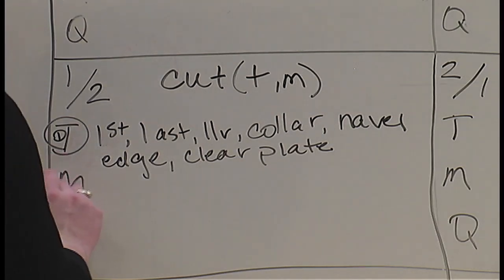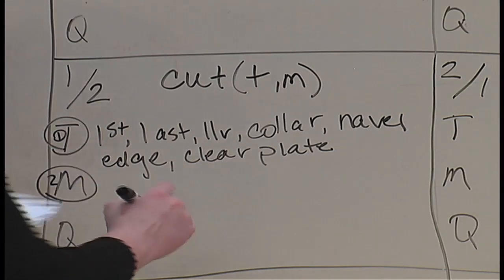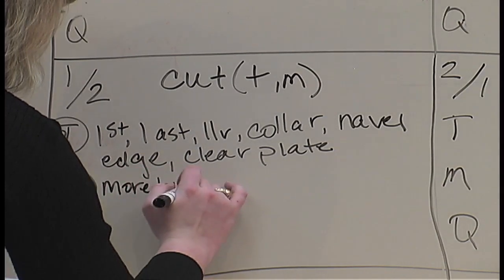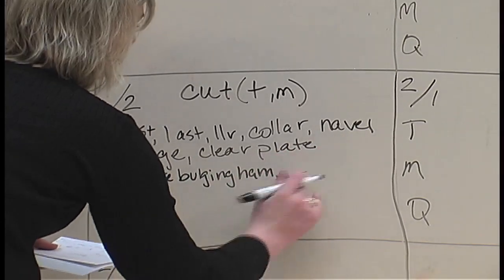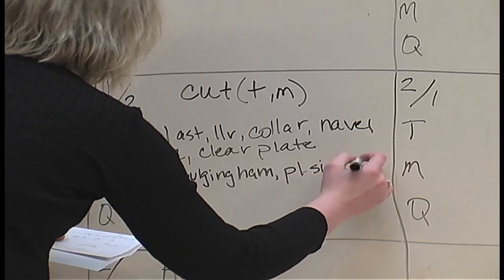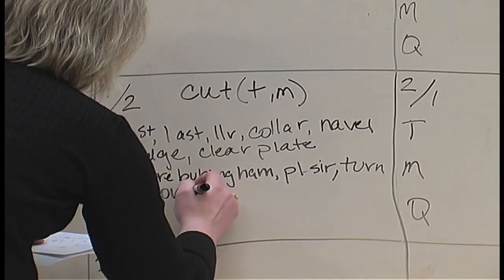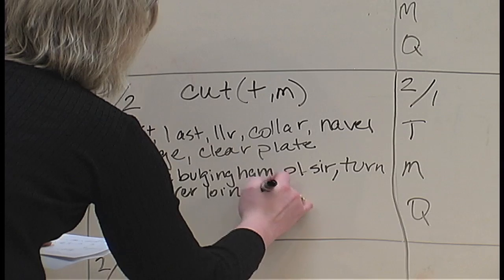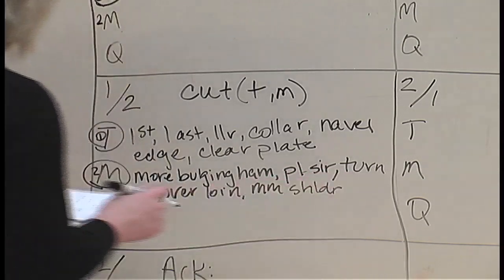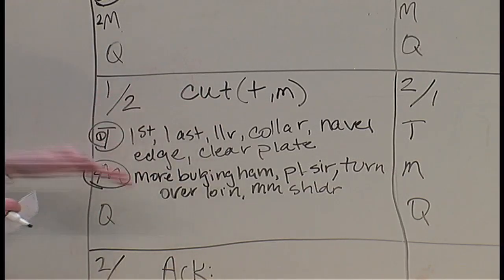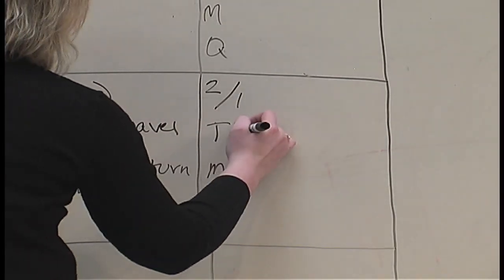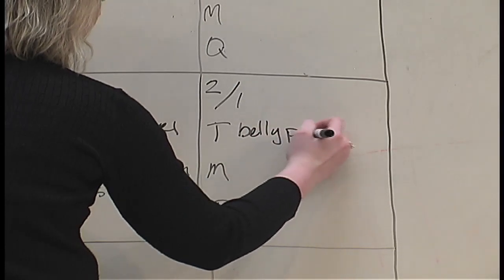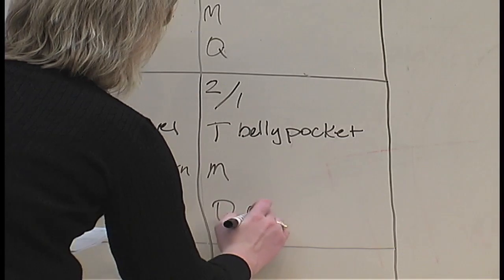The second thing is that muscling was the next important thing in this paragraph. Carcass 1 had a more bulging ham, a plumper sirloin, more turn over the loin, and a more muscular shoulder. These are the terms that support the topic sentence, illustrating that one was higher cut-ability than two. Moving to the grant side, two was trimmer in the belly pocket and did possess more feathering in the rib cage.